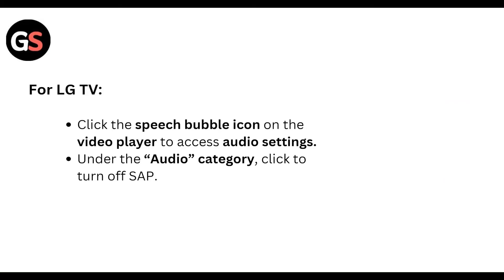For LG TV, click the speech bubble icon on the video player to access the audio settings. Under the audio category, click to turn off SAP.